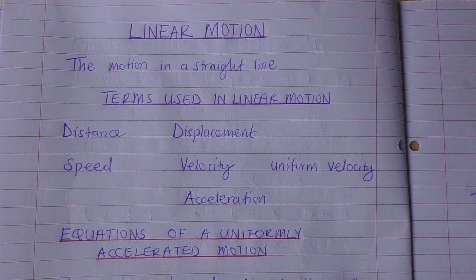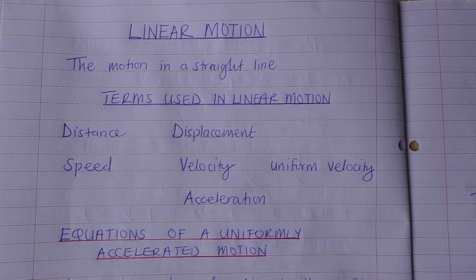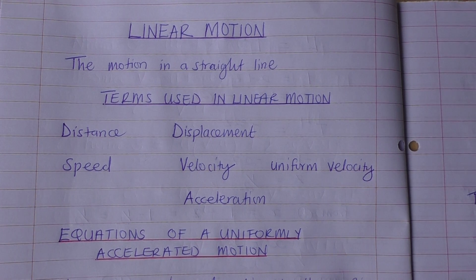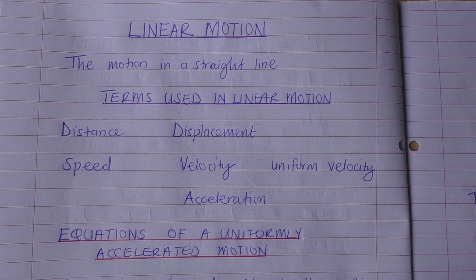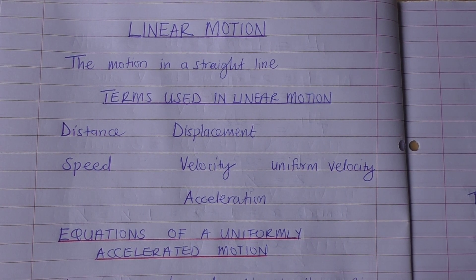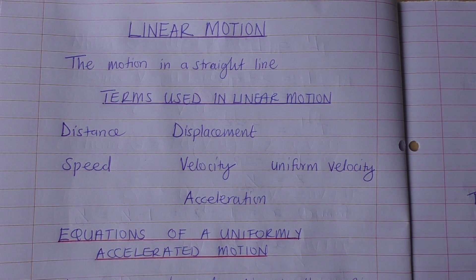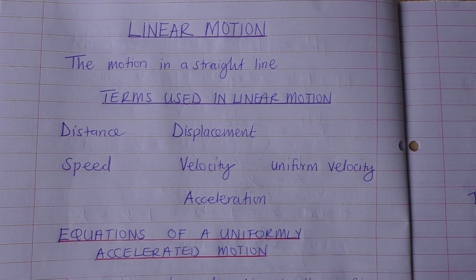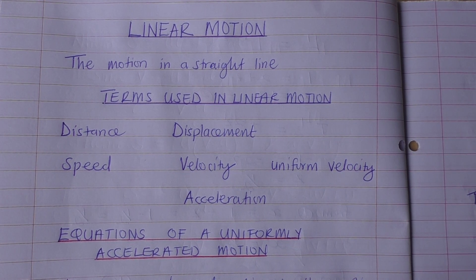We have terms that we use in linear motion. Terms such as distance, which is the length between two fixed points. We have displacement, which is the distance moved in a specific direction. We also have speed, which is the rate of change of distance. We have velocity, which is the rate of change of displacement.